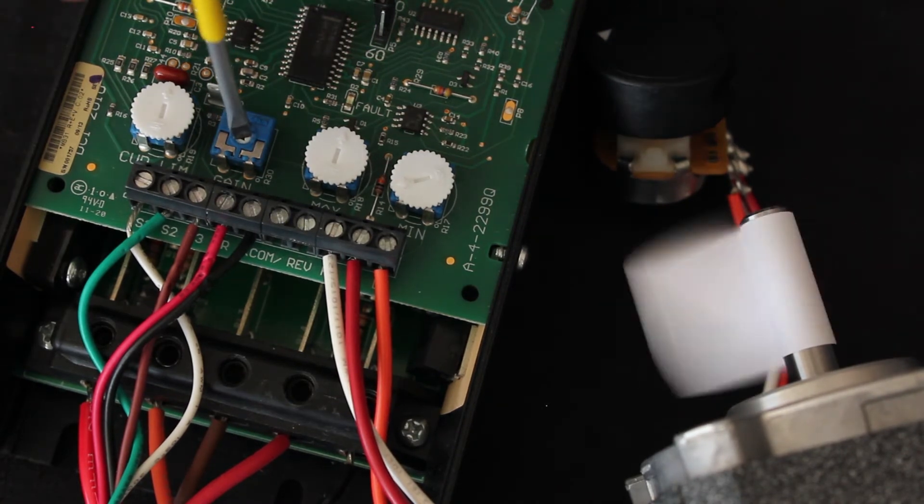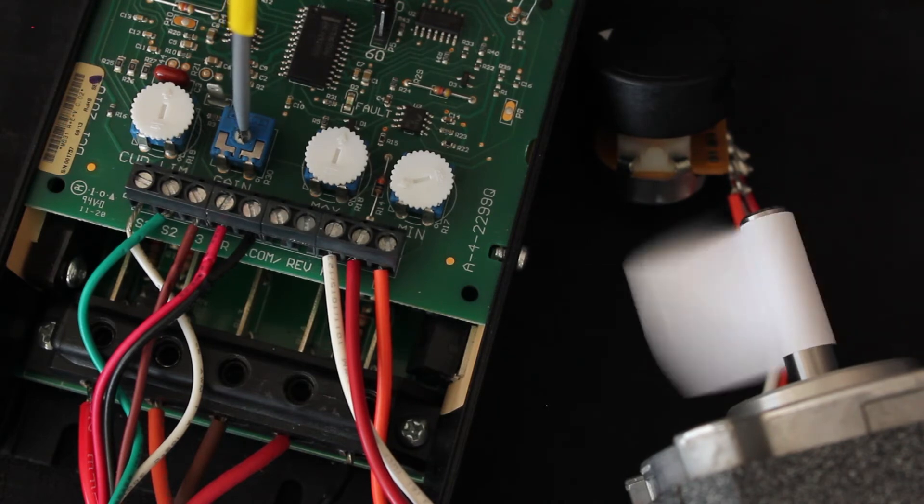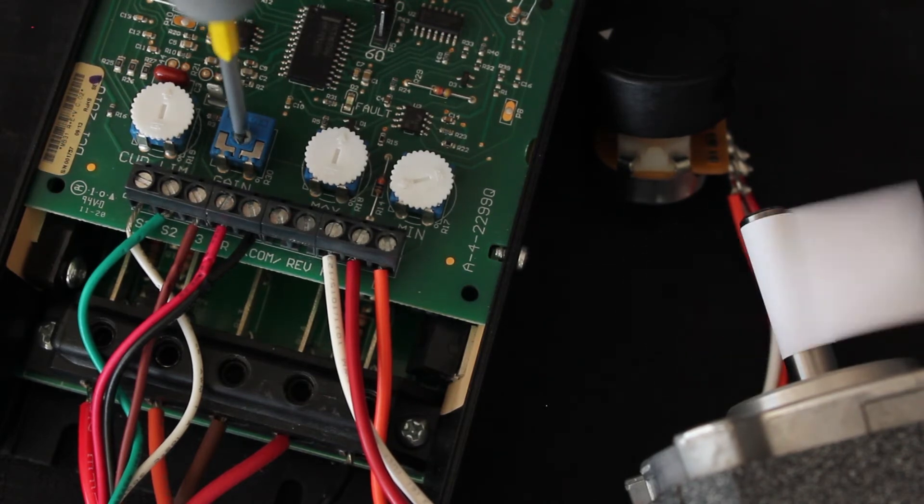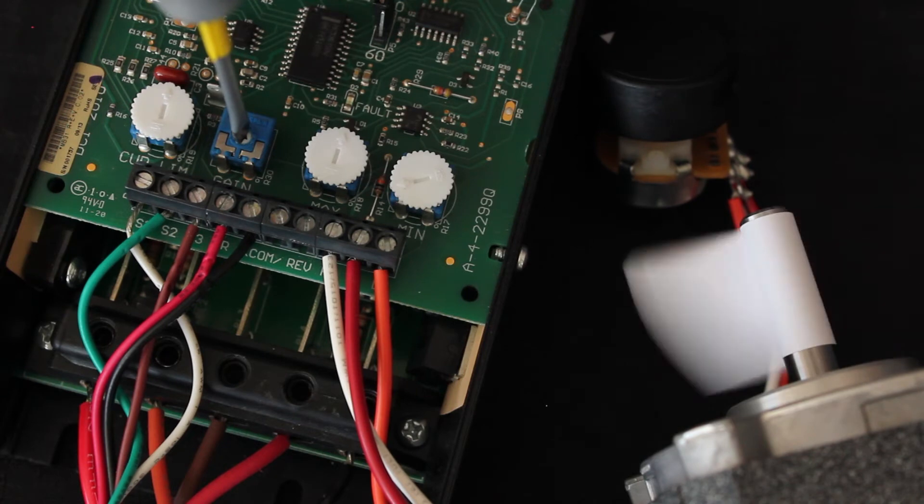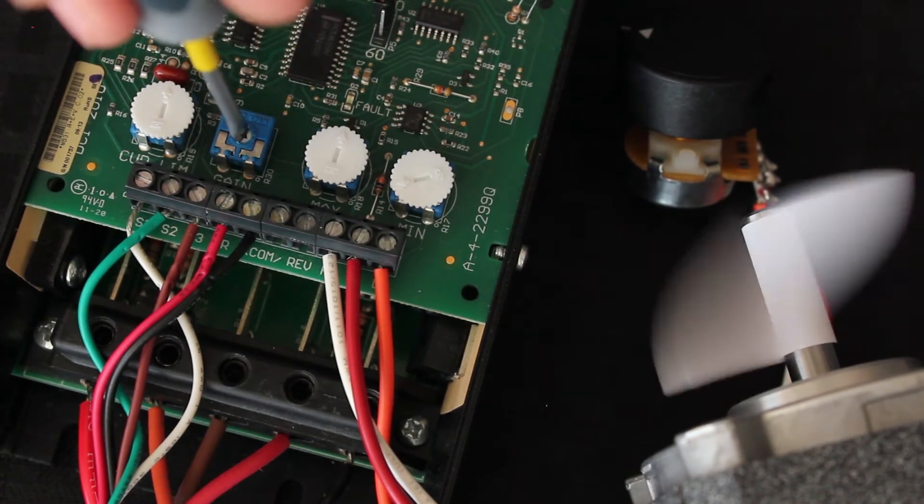Slowly rotate the closed-loop gain trim pot clockwise until the motor speed decreases slightly. Then rotate the trim pot back counterclockwise just enough to return the motor to full speed.